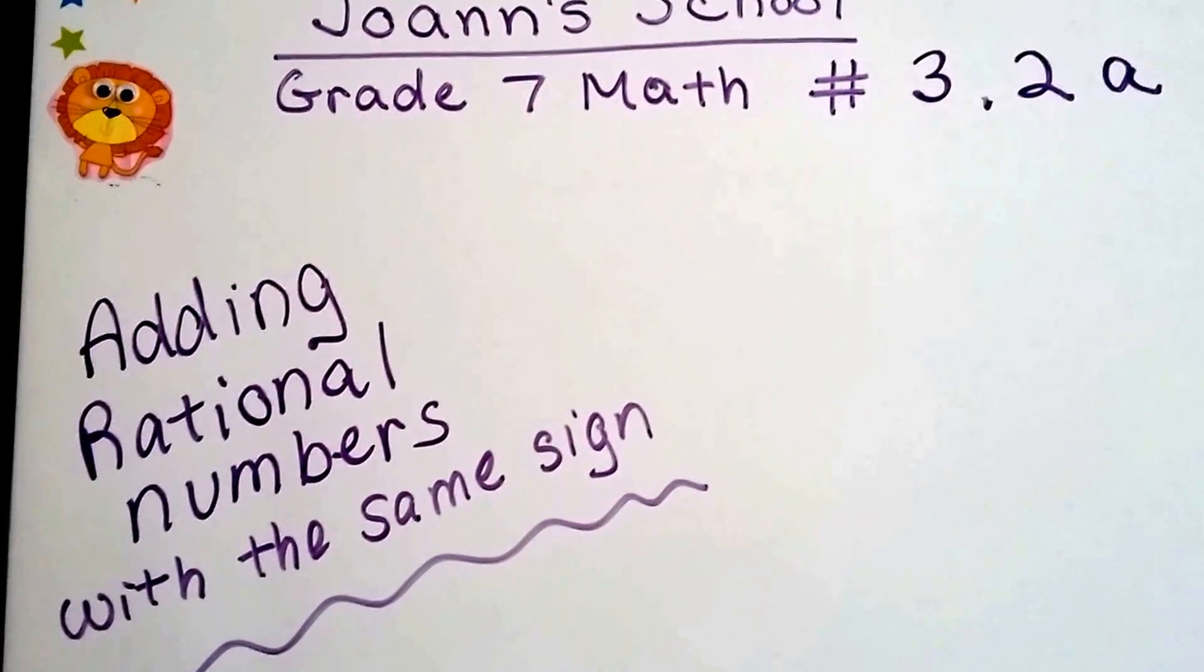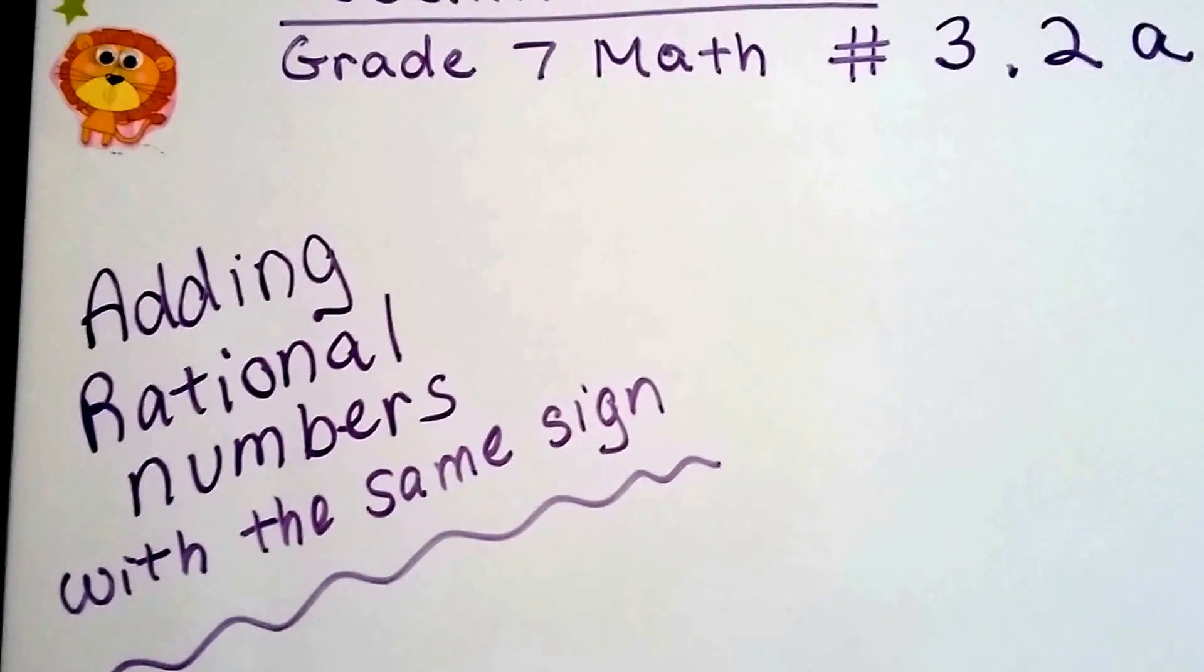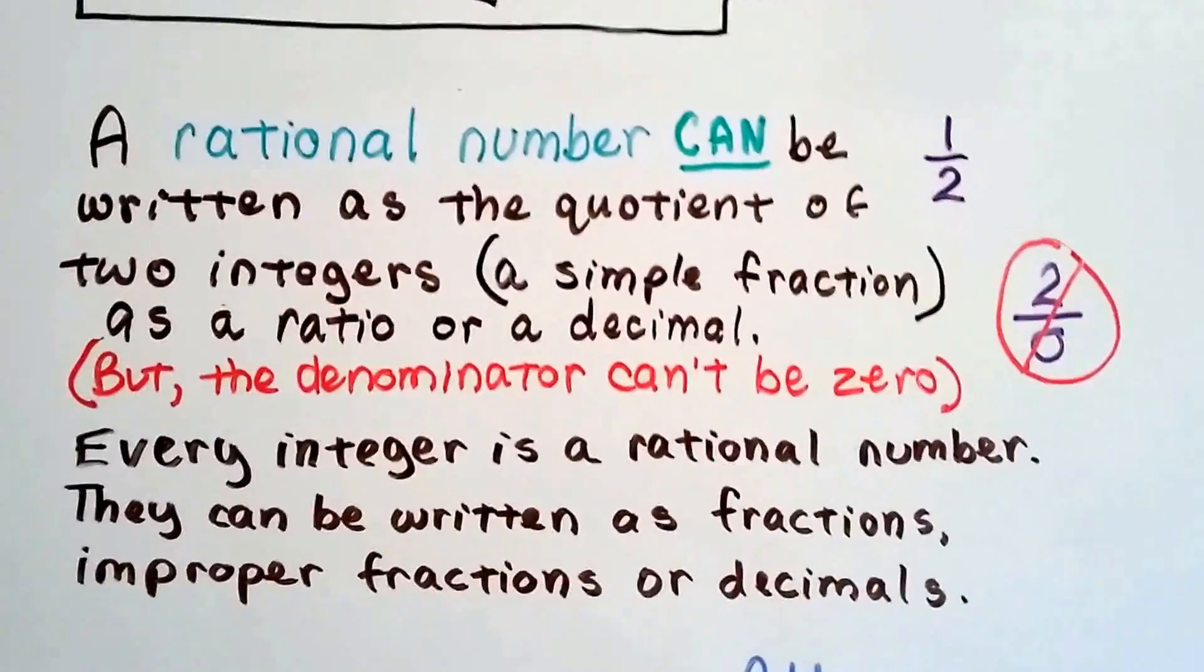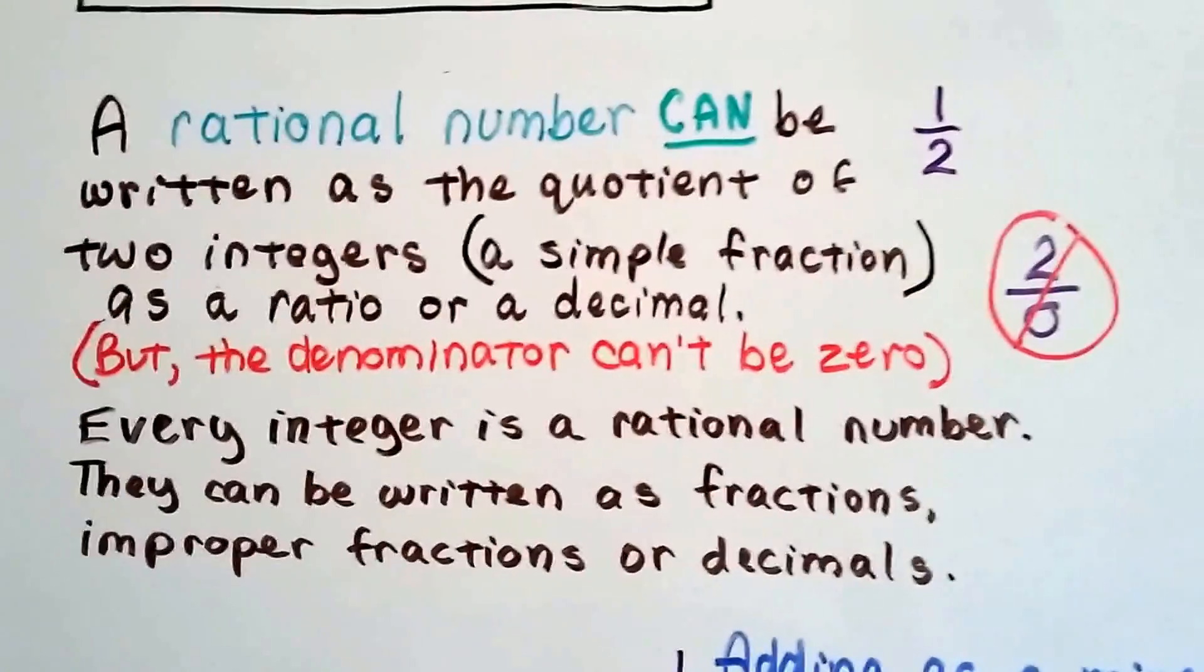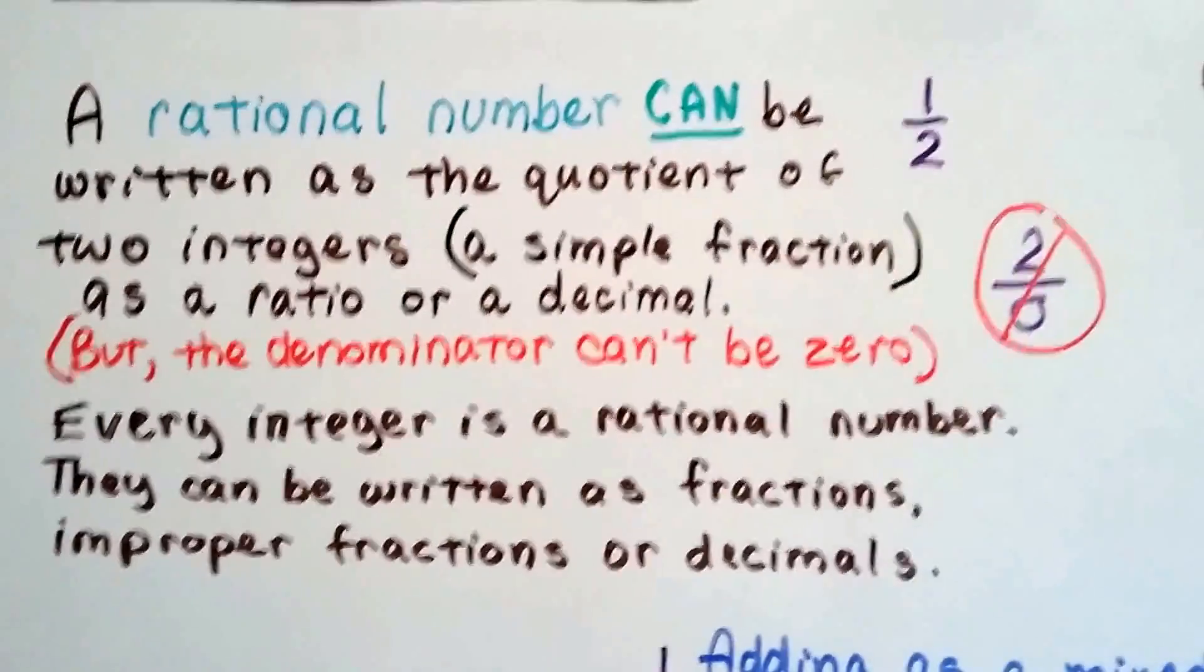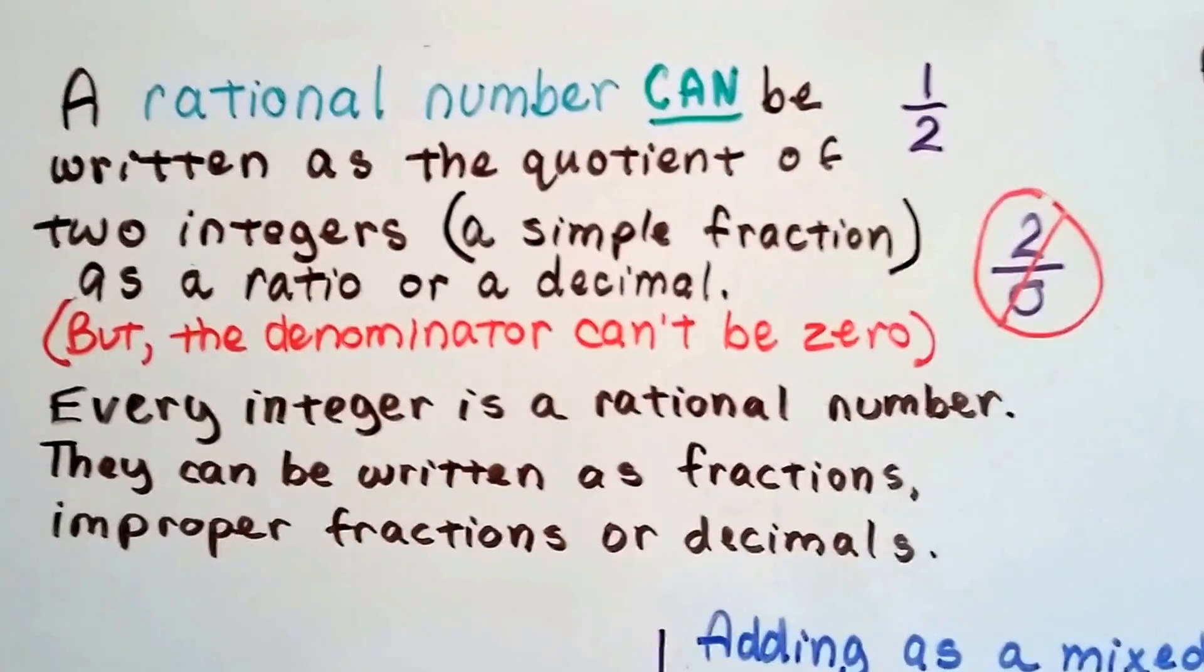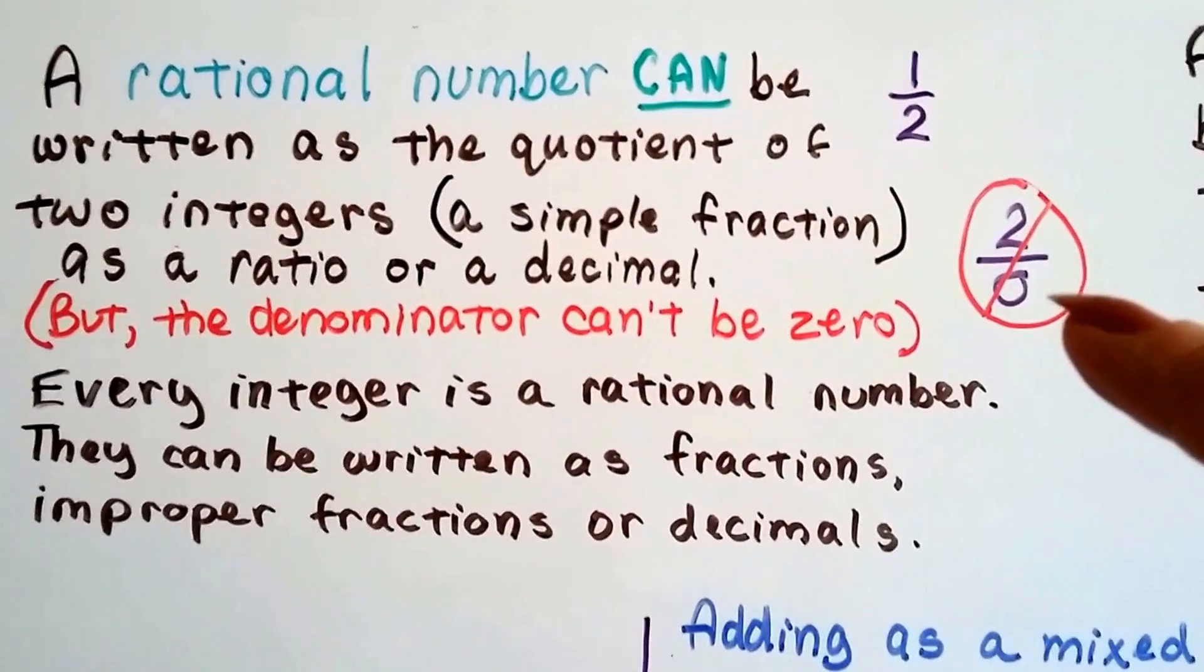Grade 7 math number 3.2a, adding rational numbers with the same sign. Do you remember from the last video, a rational number can be written as the quotient of two integers? You know, a simple fraction like that little half up here. It can be written as a ratio or a decimal, but the denominator can't be zero when it's in its fraction form.